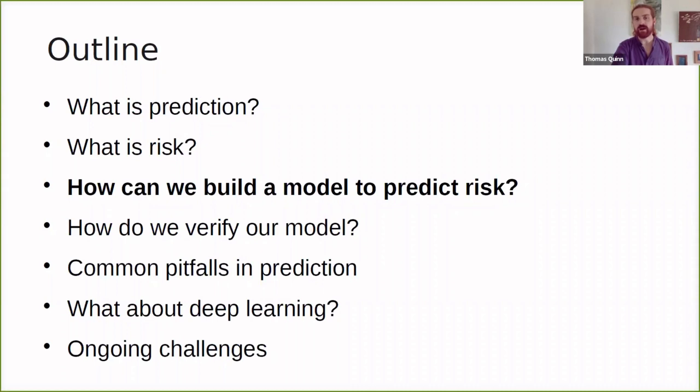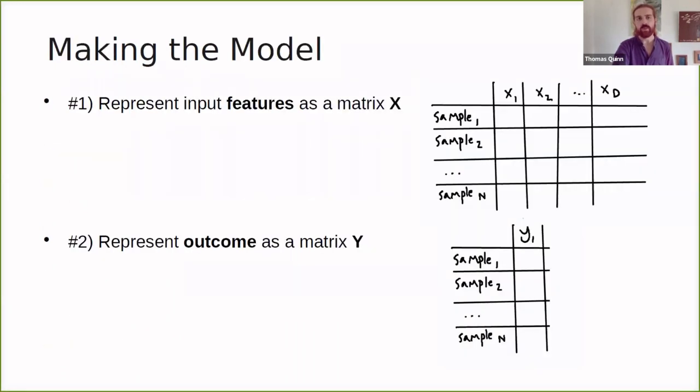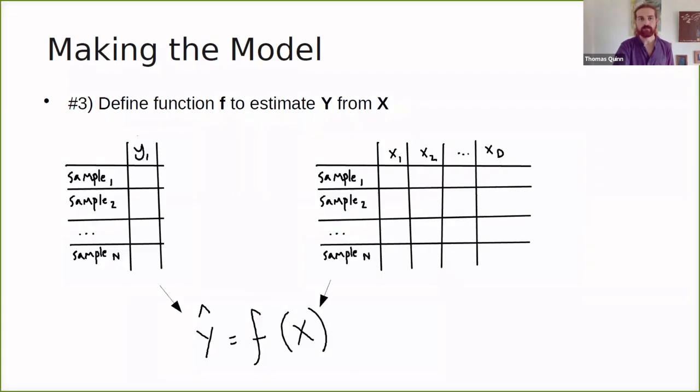So how can we actually build a model to predict risk? Well, we'll begin by representing the input features, or the predictors, as a matrix X, where you have some number of samples, say N samples, and some number of predictors, say D predictors. And then we'll represent the outcome for those same samples as another matrix Y. In this example, there's only one Y, say the disease happens or doesn't happen, or the disease is bad or not bad. And now this data is paired. So for each sample, we have both features and the outcome.